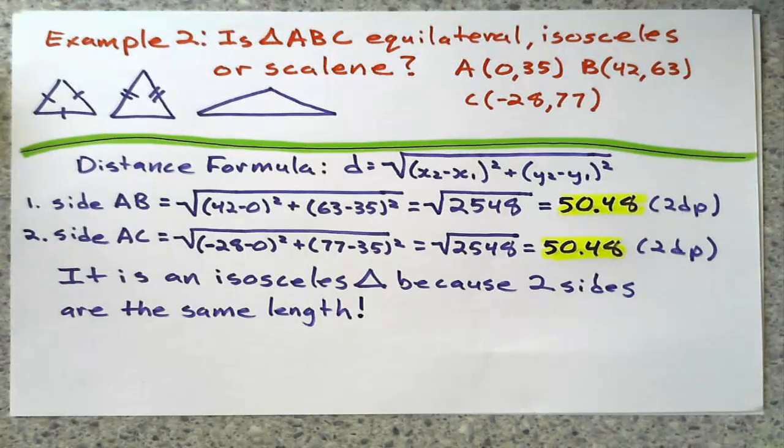So right now, you're going to say, okay, so for the record, I'm going to say it is an isosceles triangle because two sides are the same length.